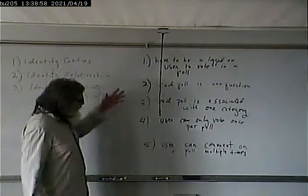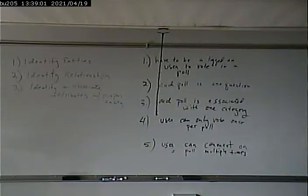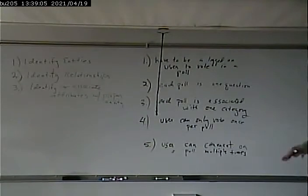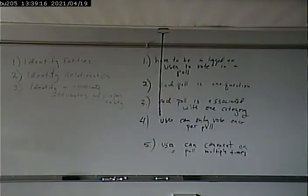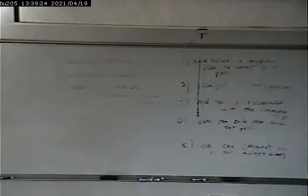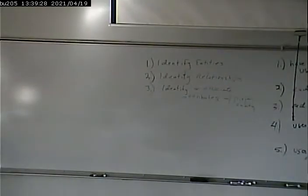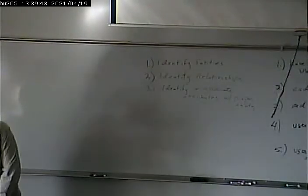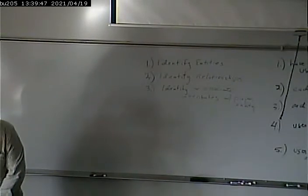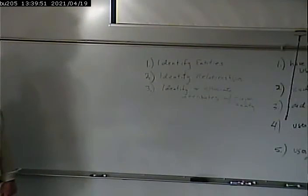We're going to be looking to identify entities, identify relationships, and identify and associate attributes with the proper entity. I'm actually going to start with point number three: each poll is associated with one category. I'm doing this deliberately. What can we glean from this statement? We have entities, we have relationships, we have attributes. What do we have? There's a one-to-many relationship — though we don't even know what there's one-to-many of yet, because our board is blank for our ERD diagram.